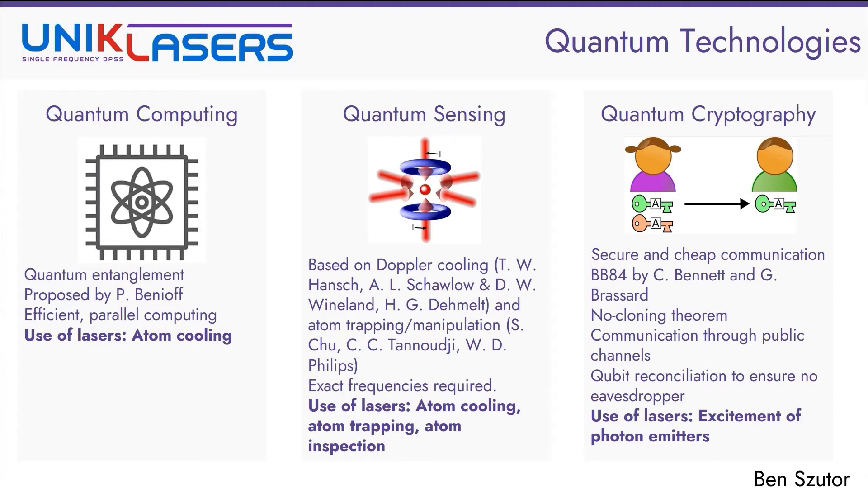There's some potential for lasers in these applications for atom cooling or atom conditioning for the atoms that are used in the computers. Now quantum sensing is more important for us as a company. These sensors are based on Doppler cooling and atom trapping, which is basically a process of confining the atoms, keeping them very stable, in which case their frequencies can be measured.